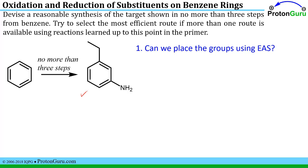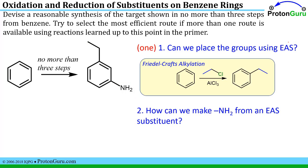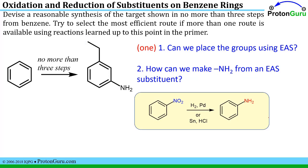We'll treat the next problem the same way. Here we're asked to place an ethyl group and an NH2 group meta to one another. We've already seen Friedel-Crafts alkylation used to put an alkyl group on, in this case an ethyl group. But we don't have a way to put NH2 on the benzene ring directly. If we put a nitro group on using nitration, we could reduce that using either palladium with hydrogen gas or tin with hydrochloric acid.